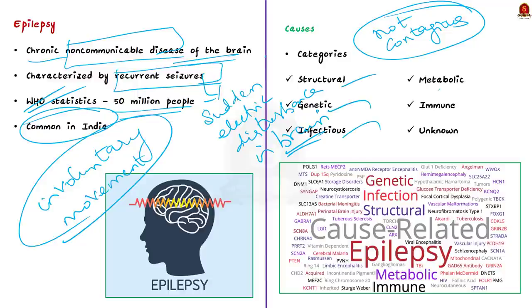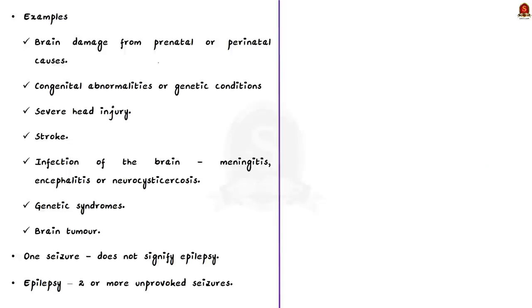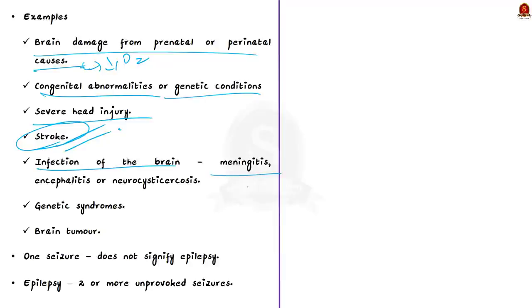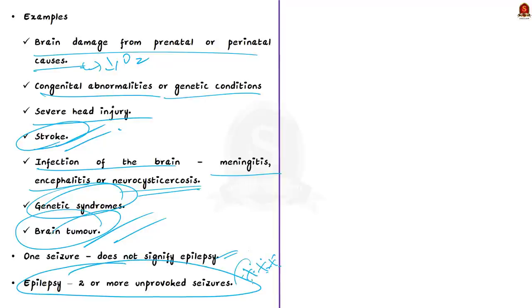Although many underlying disease mechanisms can lead to epilepsy, the cause is still unknown in about 50% of cases globally. The causes of epilepsy are divided into several categories: structural, genetic, infectious, metabolic, immune, and unknown. Examples include brain damage from prenatal or perinatal causes like loss of oxygen or trauma during birth and low birth weight, congenital abnormalities or genetic conditions with associated brain malformations, severe head injury, stroke that restricts oxygen to the brain, brain infections such as meningitis, encephalitis, or neurocysticercosis, genetic syndromes, and brain tumors. One seizure does not signify epilepsy, because up to 10% of people worldwide have one seizure during their lifetime. A person is diagnosed with epilepsy if they have two or more unprovoked seizures.